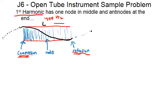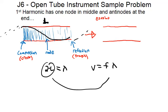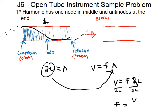If L represents the length of the pipe, then 2 times L equals the wavelength for the first harmonic. We have the crest at one end, trough at the other, so 2L = λ. Since v = frequency × wavelength, substituting gives v = frequency × 2L, and dividing both sides by 2L gives frequency = v / 2L.